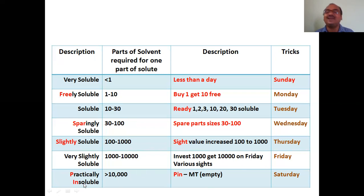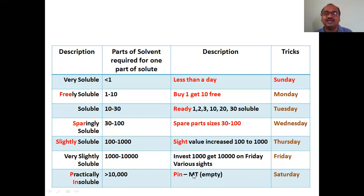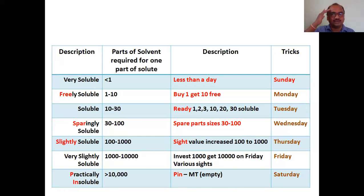For 'practically insoluble,' remember PIN — P for practically, I for insoluble, N for nothing/empty. All the previous terms had 'soluble' in them, but here you get 'insoluble.' PIN is empty — more than 10,000 parts required, like an empty container. You can use these tricks or directly memorize all the terms — whichever works for you.